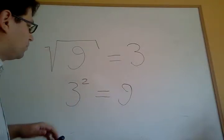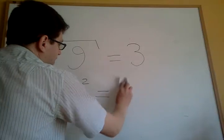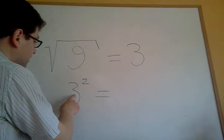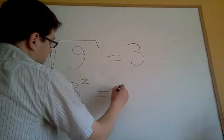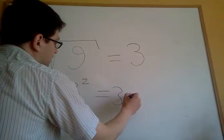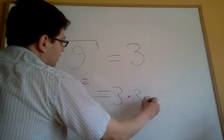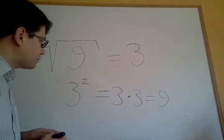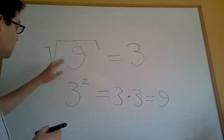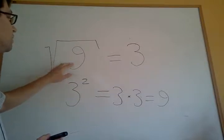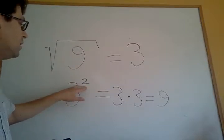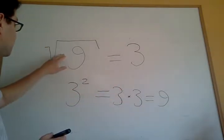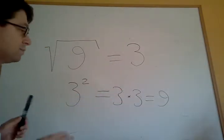What does 3 squared mean? 3 squared means you need to multiply the number 3 two times: 3 times 3 equals 9. And square root is the opposite of square — 3 times 3 equals 9, so square root of 9 equals 3.